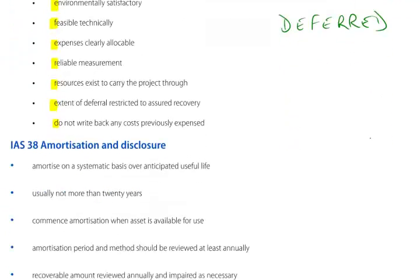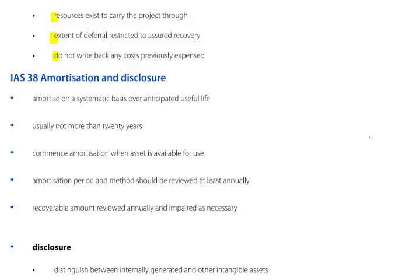With reference to amortisation and disclosure, development costs and intangibles should be amortised on a systematic basis over the estimated useful life, which should not normally be more than 20 years. If it is more than 20 years, then no amortisation would take place, but clearly the situation should be reviewed each year. Amortisation should commence when the asset is available for use. The amortisation period and method should be reviewed at least annually. Recoverable amount should be reviewed annually and impaired as necessary.